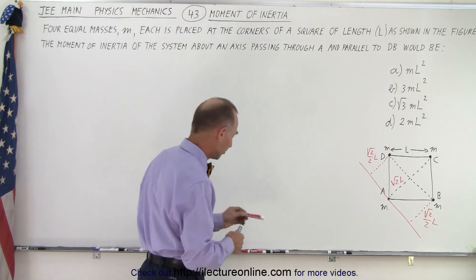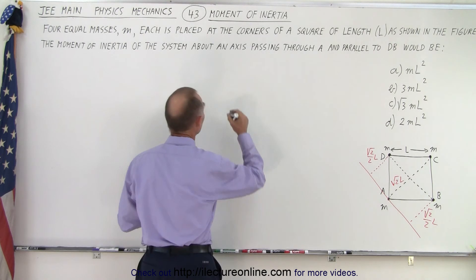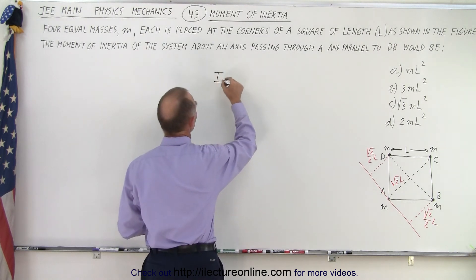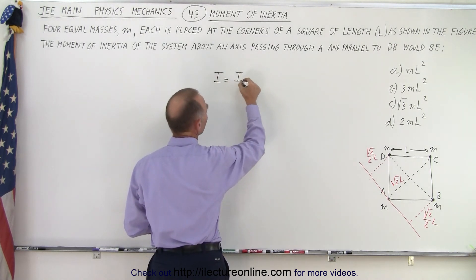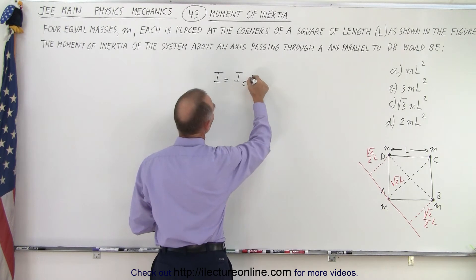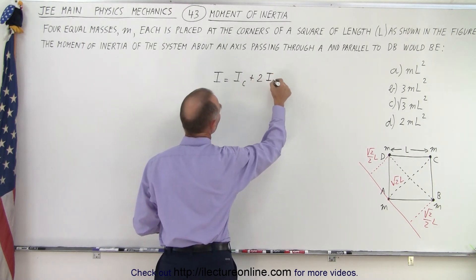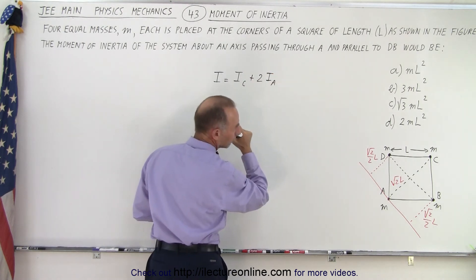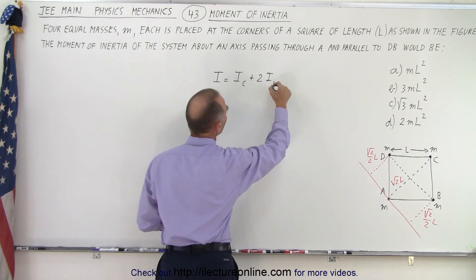So what we're going to do now is write the following. We know that the moment of inertia is going to be the sum of I sub C plus 2 times I sub B.